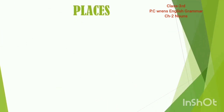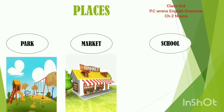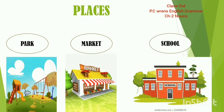Next one is places — places means jagah ke naam, where we visit. As you can see: park — ye ek jagah ka naam hai where we go to play. Market — bazaar, it is also the name of a place where we go to buy things. Third one is school — it is also a place where we go to study. These are the examples of places, and there are many more examples around you.